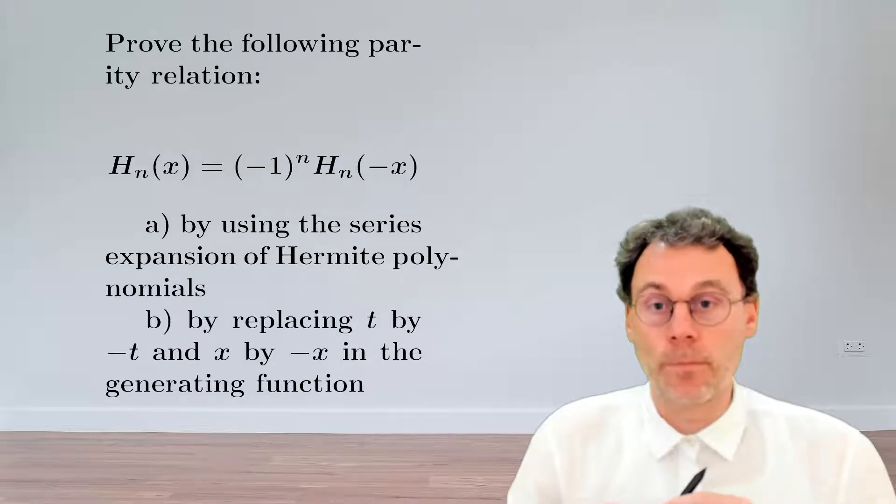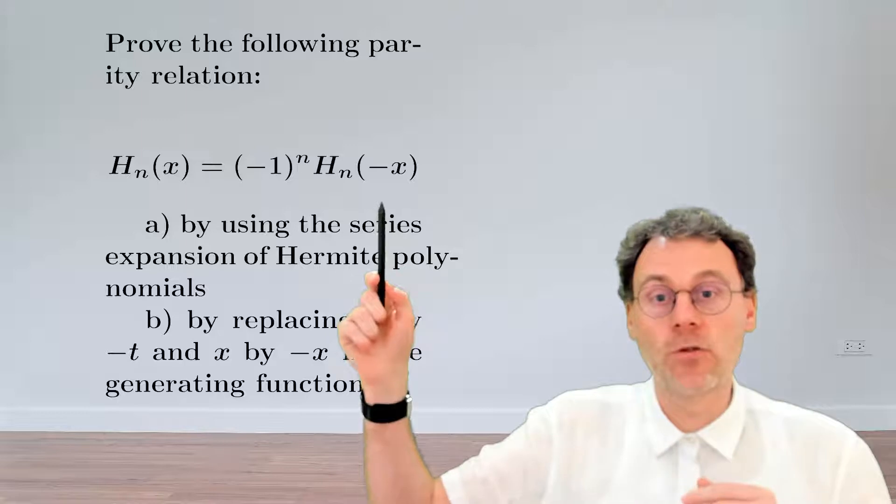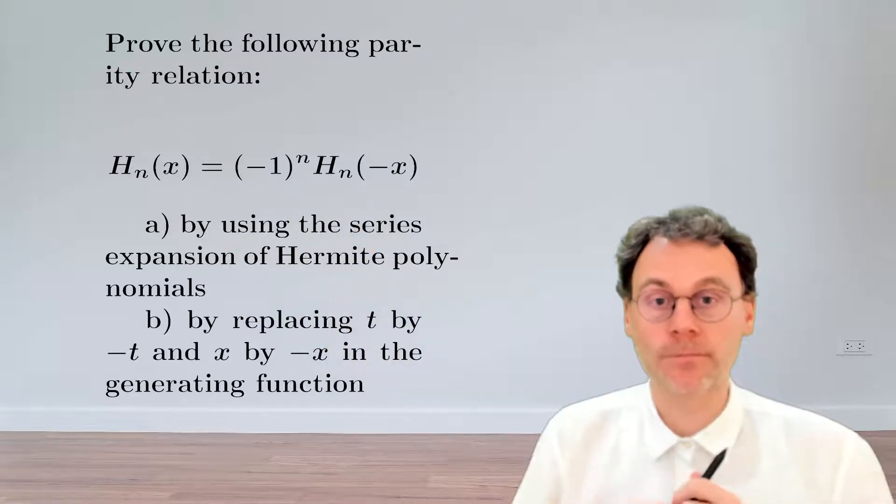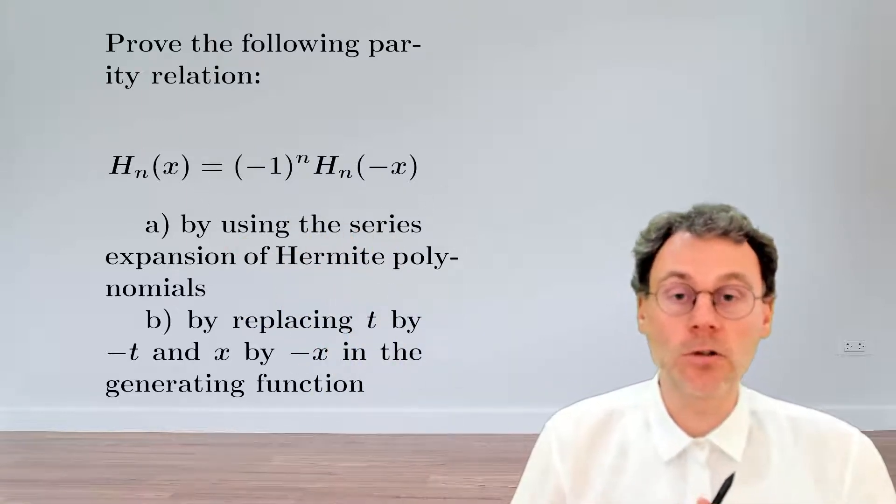This exercise is about the parity of the Hermite polynomials, i.e., what happens if you replace x by minus x in the argument. You can show this in two different ways.